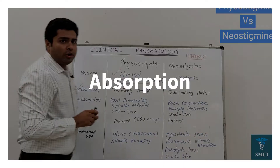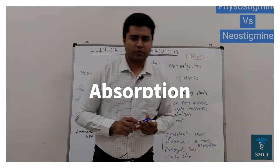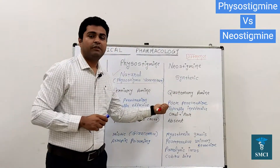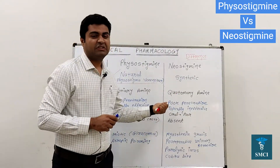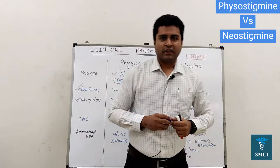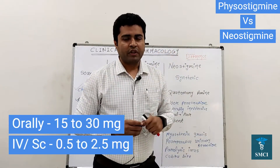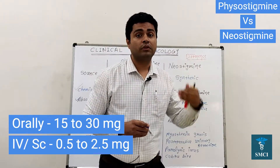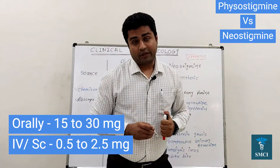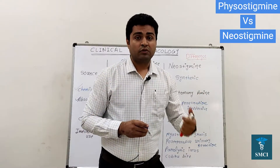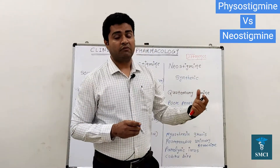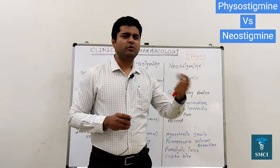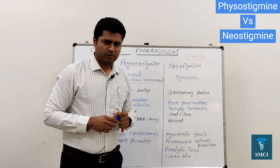Regarding absorption — if we give these drugs orally, remember that physostigmine has very good absorbability, while neostigmine is very poorly absorbed. If we give neostigmine orally, we need to give 20 to 30 times higher than its subcutaneous or IV doses. So if the IV dose is 1 mg, we need to give 20 to 30 mg orally. Tablets of 15 to 30 mg are also available for neostigmine.